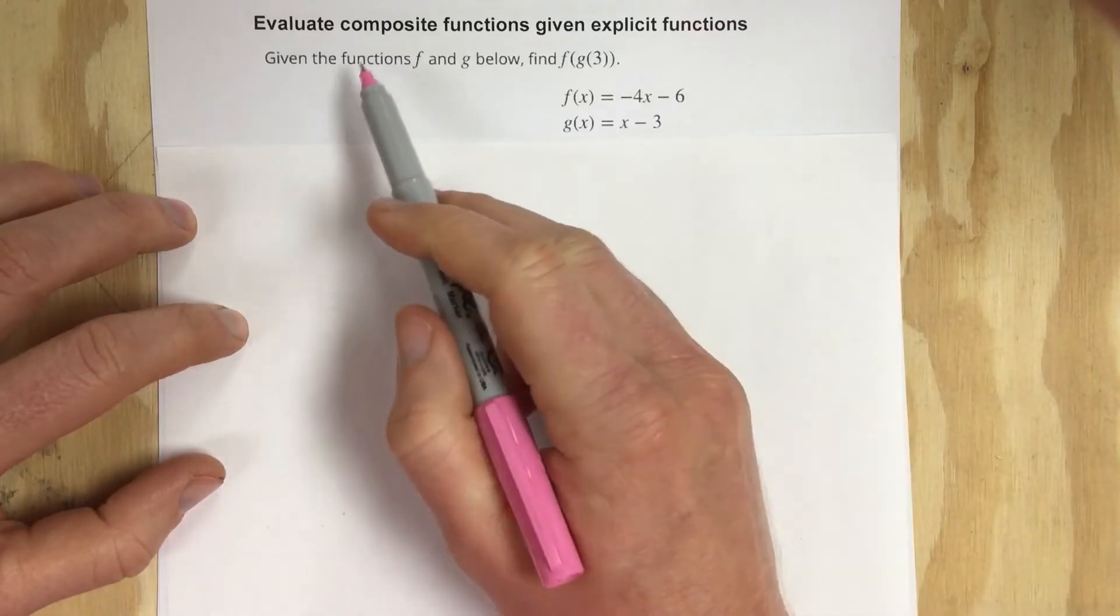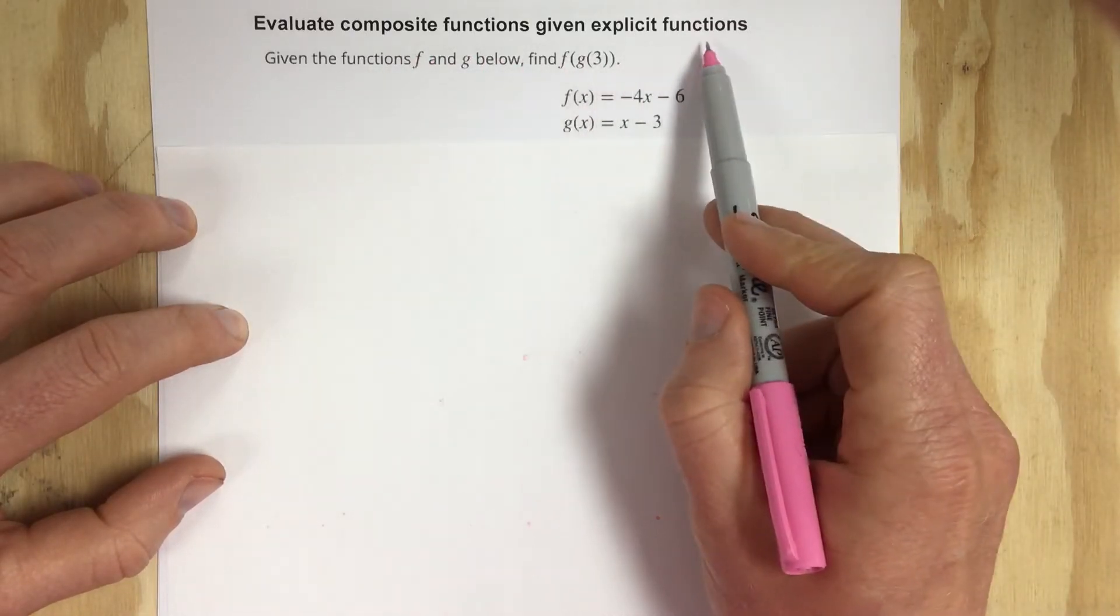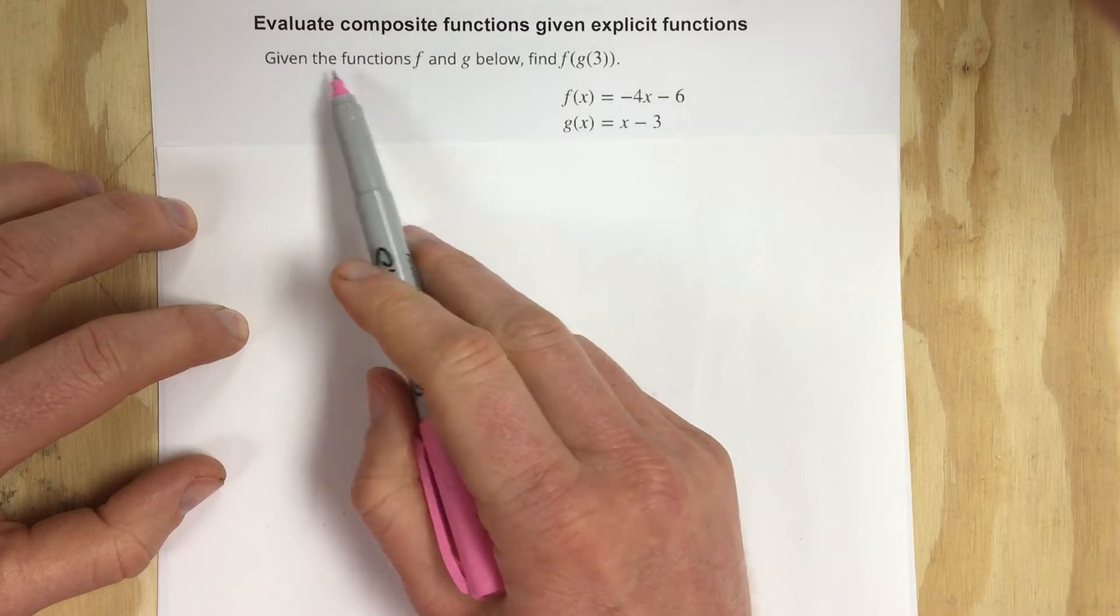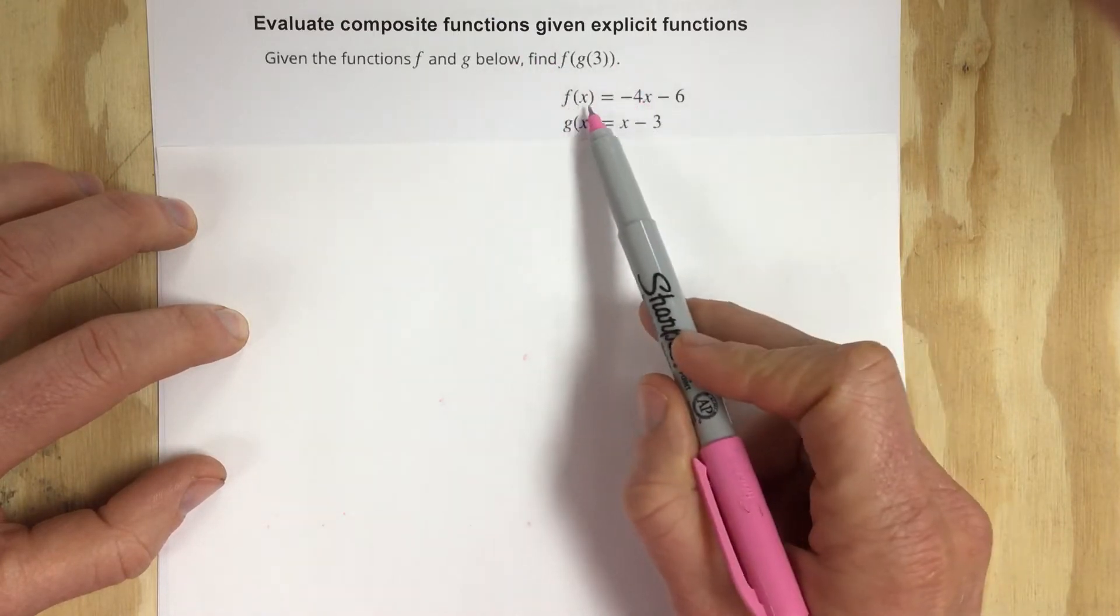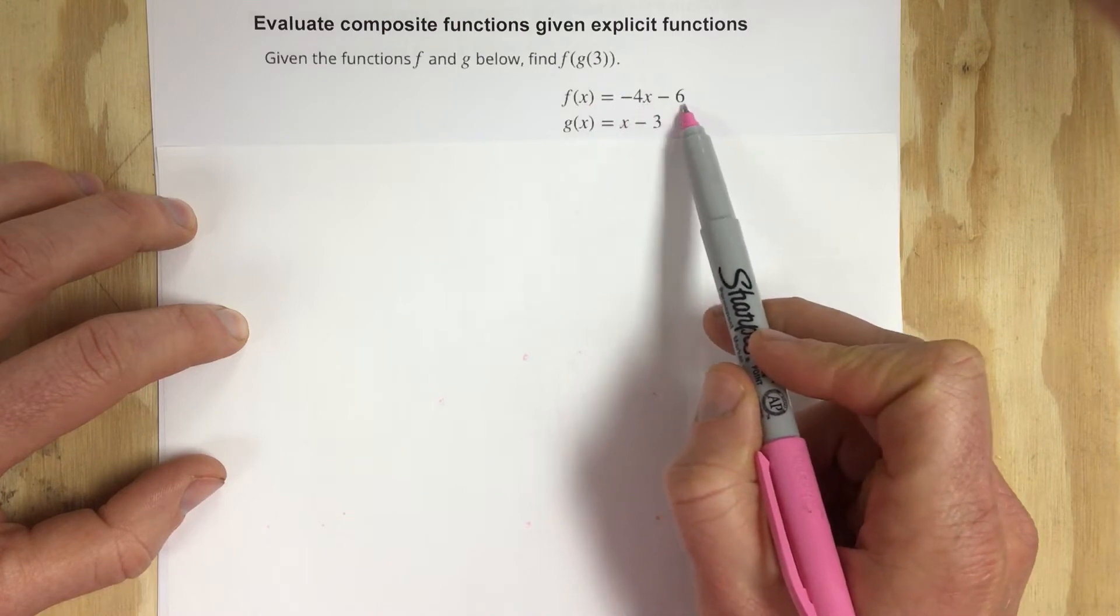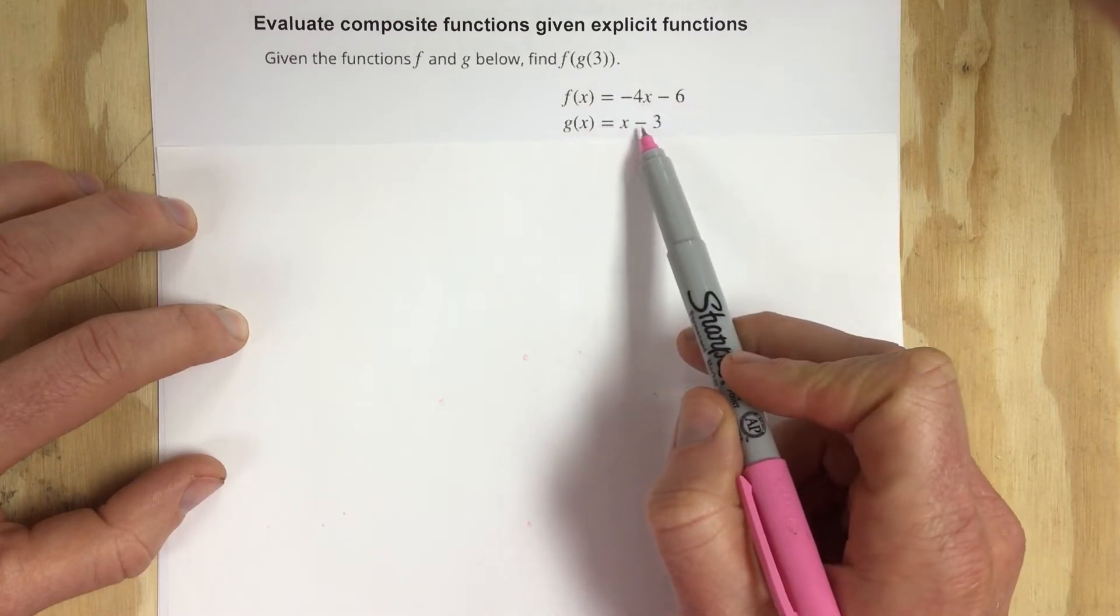In this problem we're going to evaluate composite functions given explicit functions. Given the functions f and g below, find f of g of 3. They give you f(x) = -4x - 6 and g(x) = x - 3.